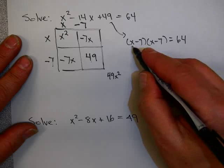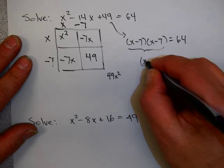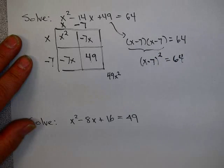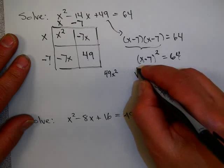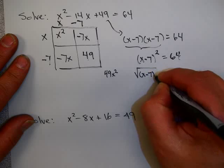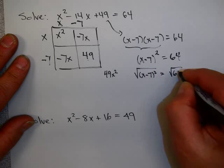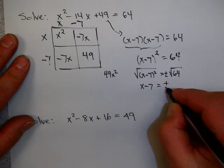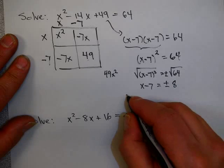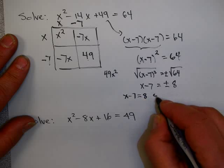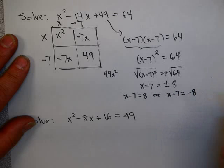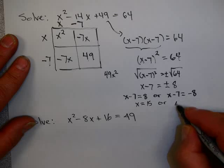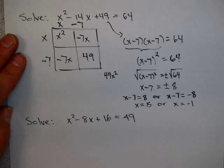So this factors into x minus 7 times x minus 7 equals 64. Now, you are lucky in this problem. This happens to be what we call a perfect square trinomial. And now this problem is reduced down to the form of the ones we just did. So take the square root of both sides. Don't forget your plus or minus. I almost did there. And the square root of 64 is 8. So this says x minus 7 equals 8 or x minus 7 equals minus 8. So that gives you x equals 15 or x equals minus 1. And those are your solutions for that problem.